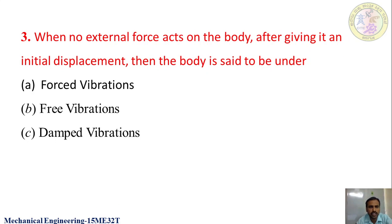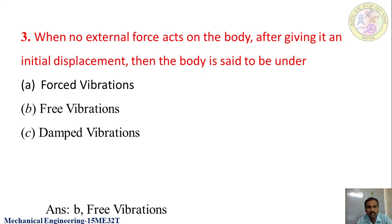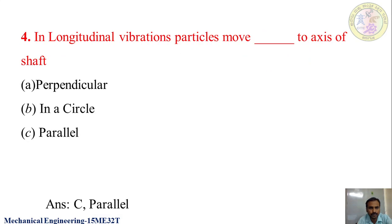The next question: when no external force acts on the body after giving it an initial displacement, then the body is said to be under — forced vibrations, free vibrations, or damped vibrations? The answer is free vibrations. Once after giving an initial displacement, the body keeps on vibrating without any external force, then the vibration is said to be free vibrations. The next question: in longitudinal vibration, particles move — blank — to the axis of the shaft. The options are perpendicular, in a circle, or parallel. The answer is parallel to the axis of the shaft.